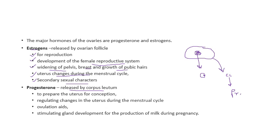So to summarize: the follicle — known as the Graafian follicle or mature follicle — releases the ovum (egg). After the ovum is released, the remaining structure is known as corpus luteum, which is formed from that very follicle. The corpus luteum then releases the hormone progesterone.